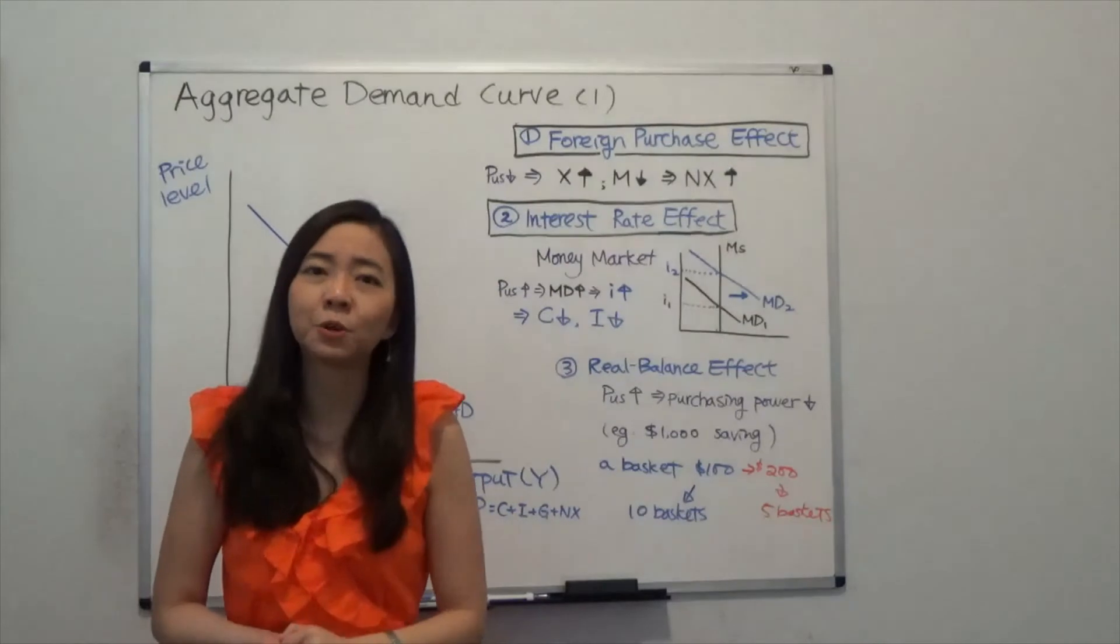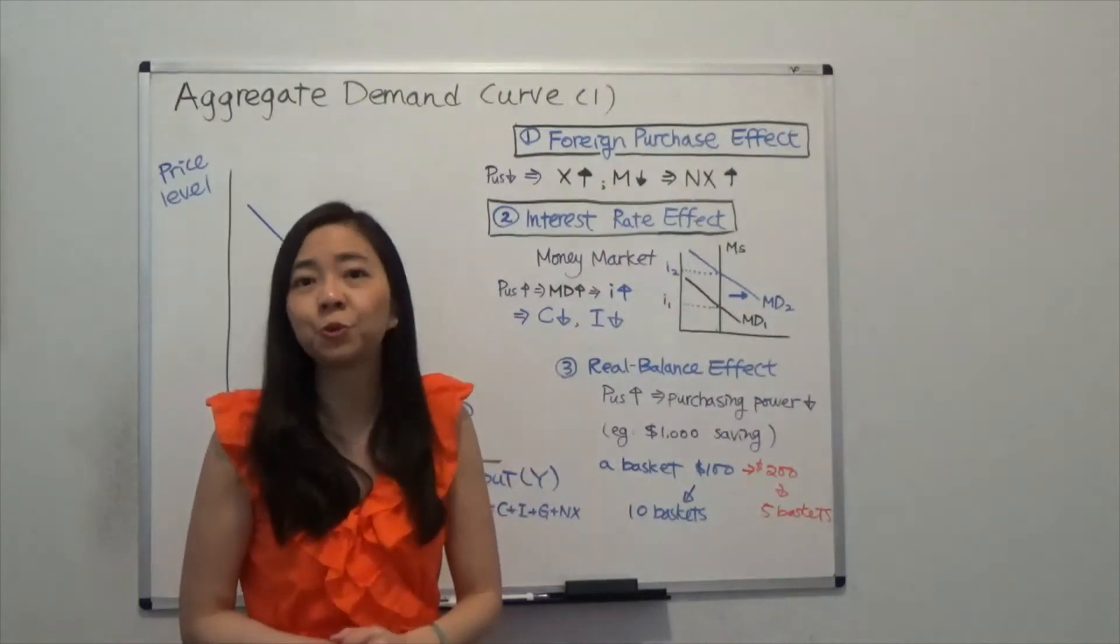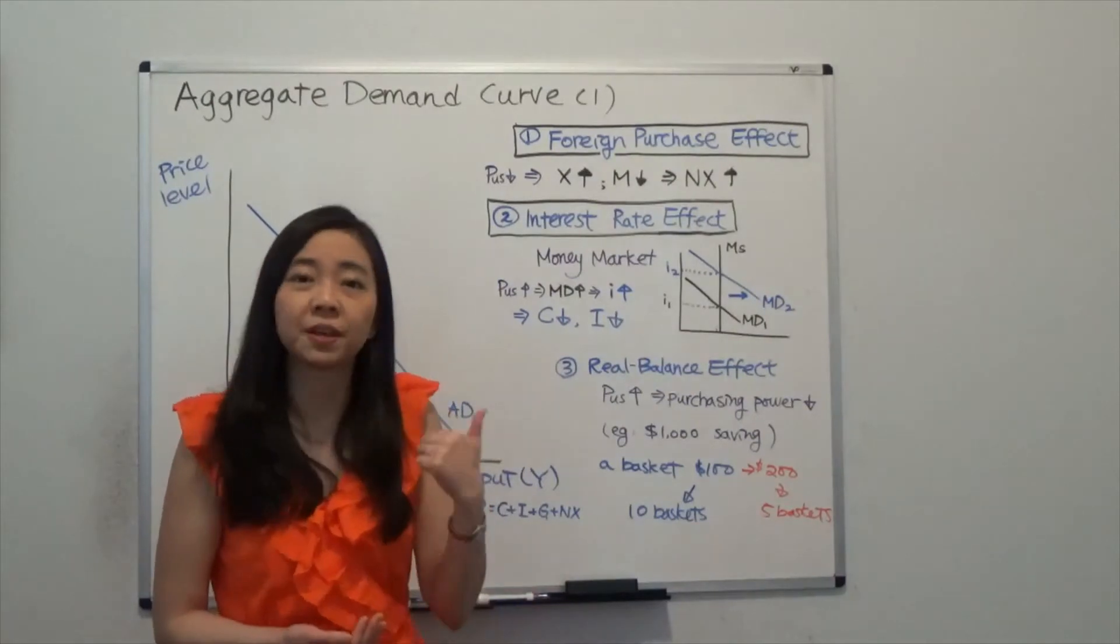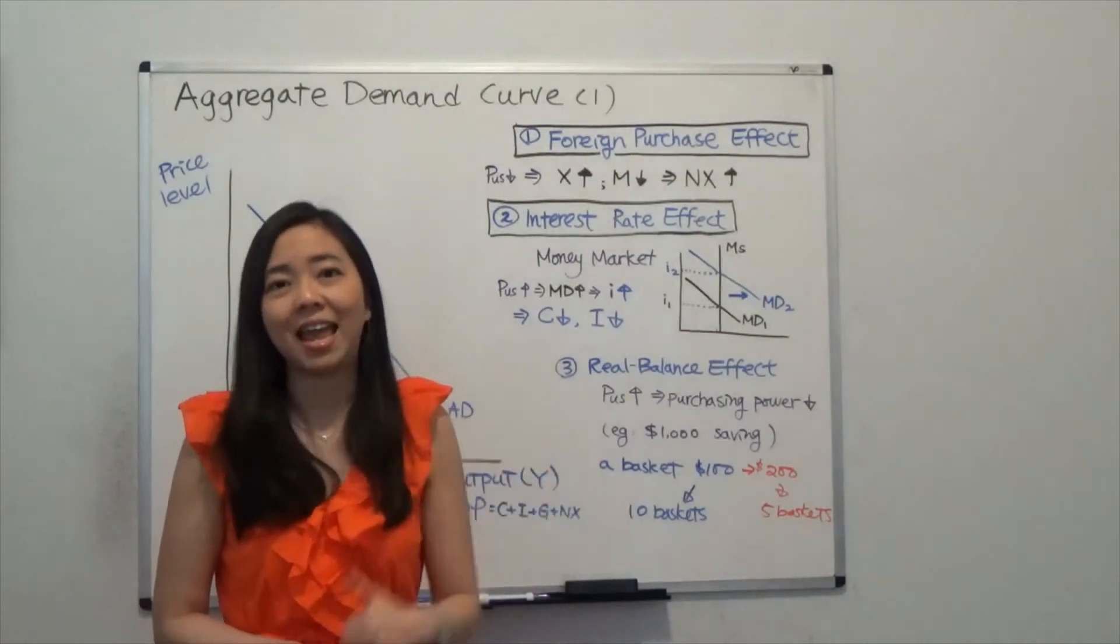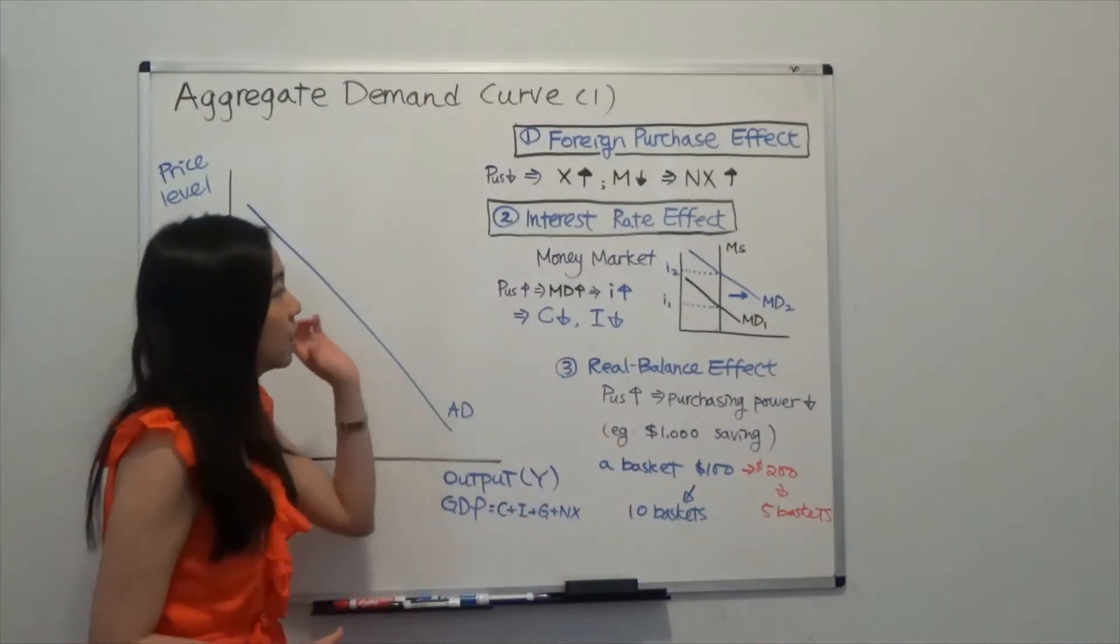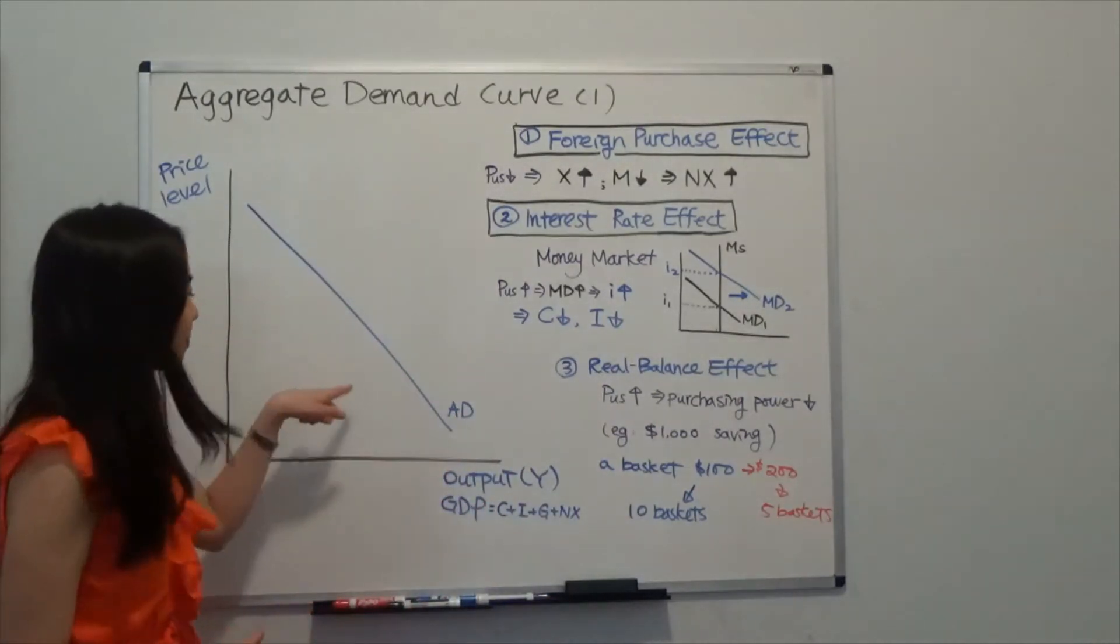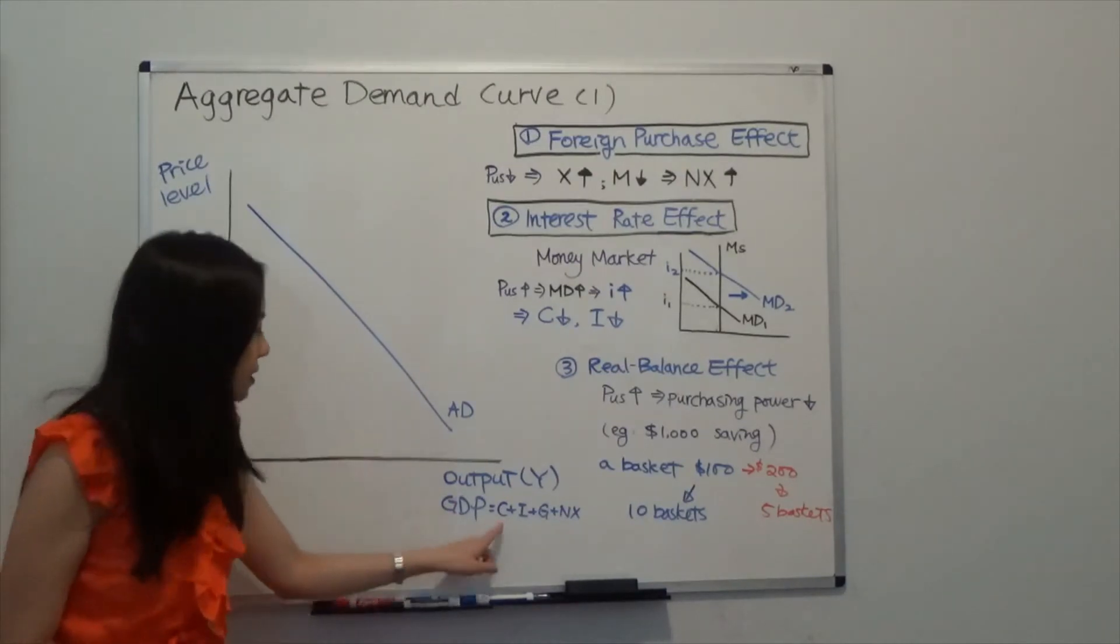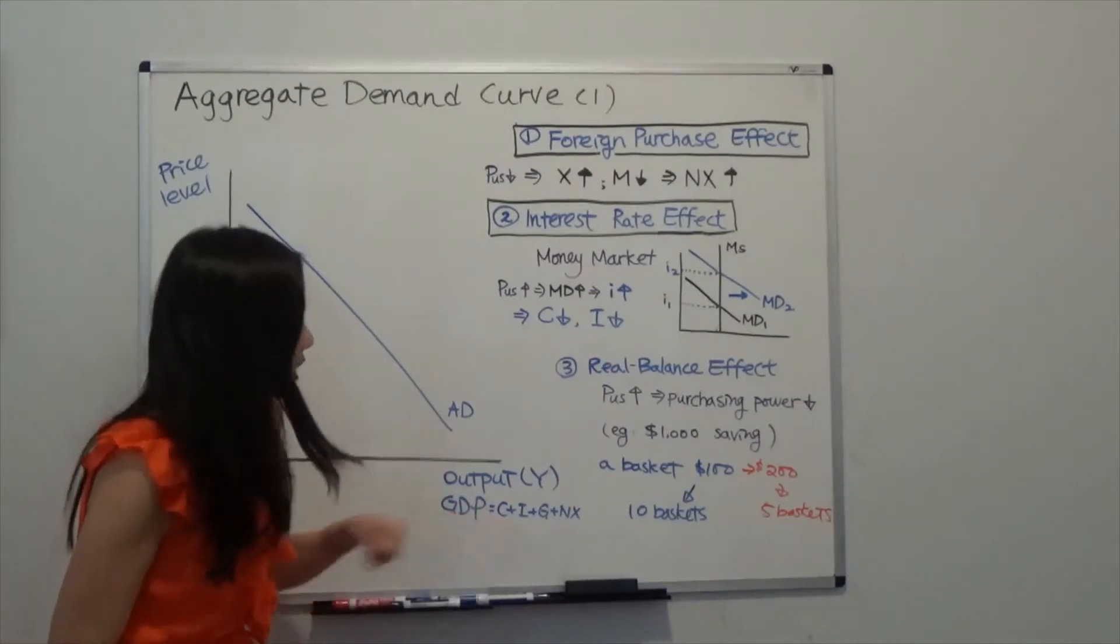Now, we know that when the interest rate goes up, it is harder for you to get loans because interest rate is higher. Therefore, your consumption is going to go down and your investment is also going to go down. That's the reason why when the price level goes up here, then your output is going to go down because your consumption goes down and your investment also goes down.